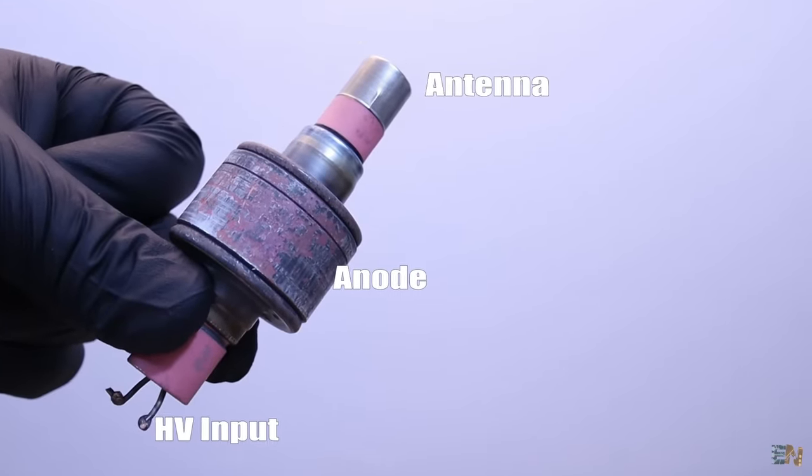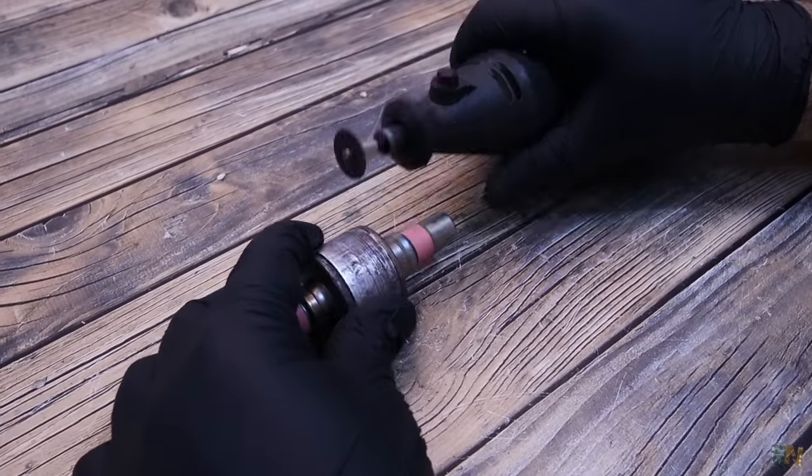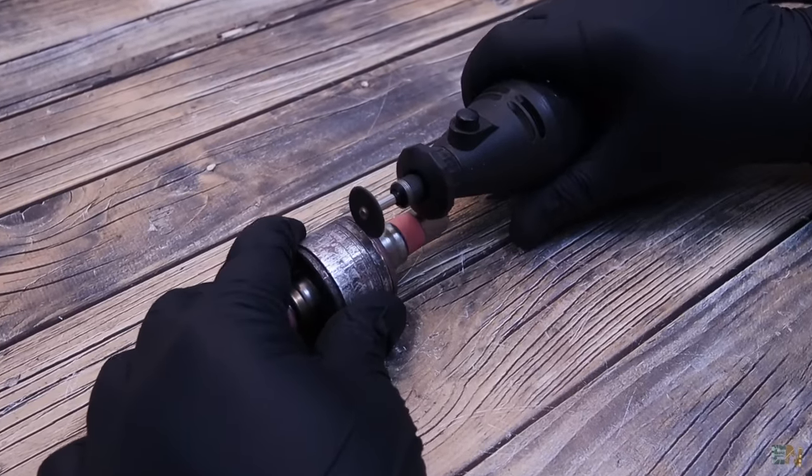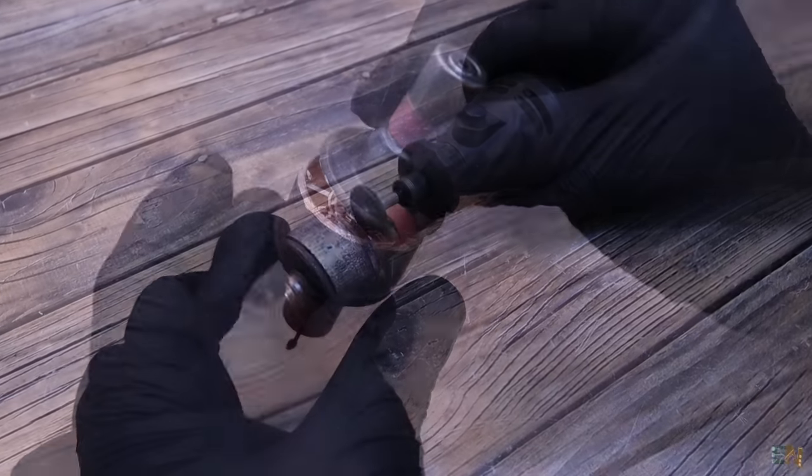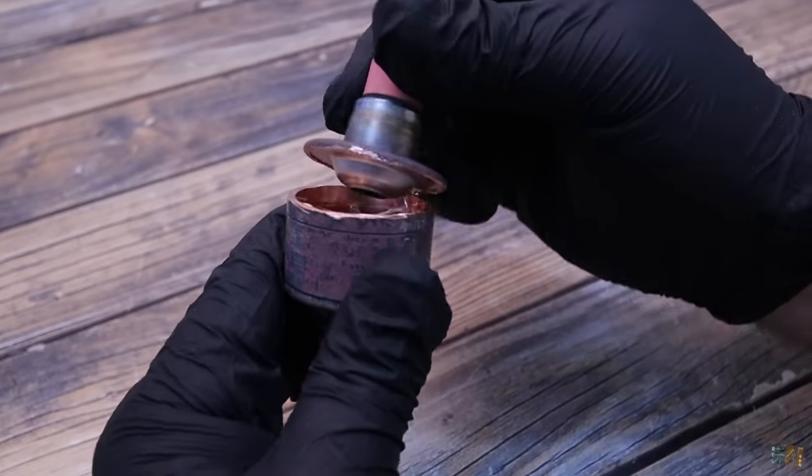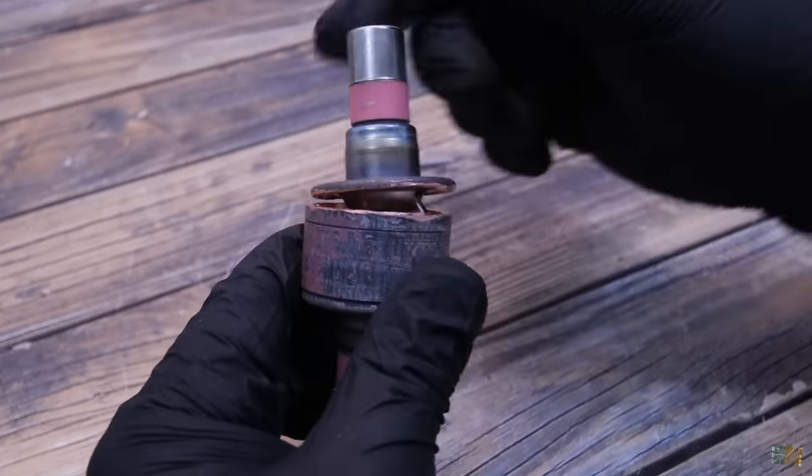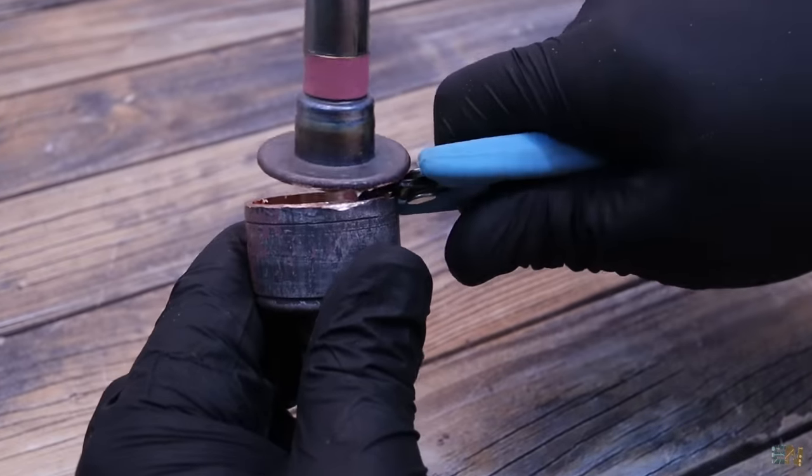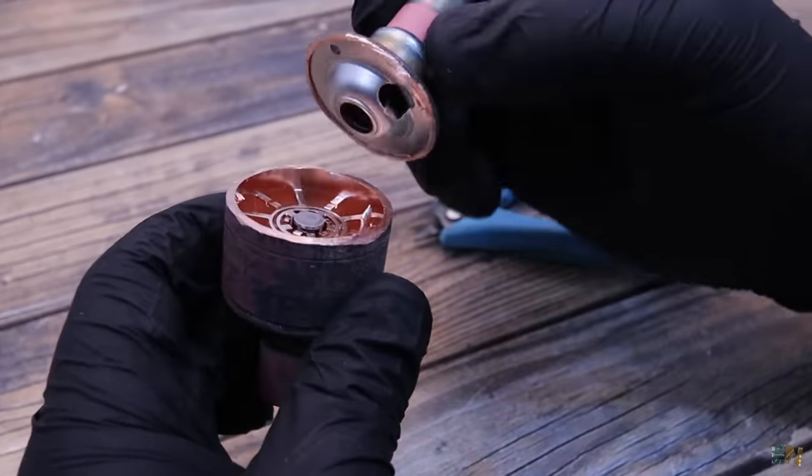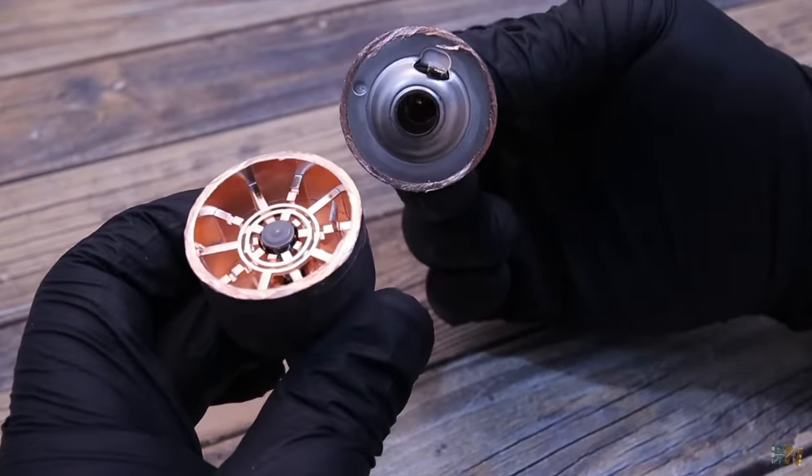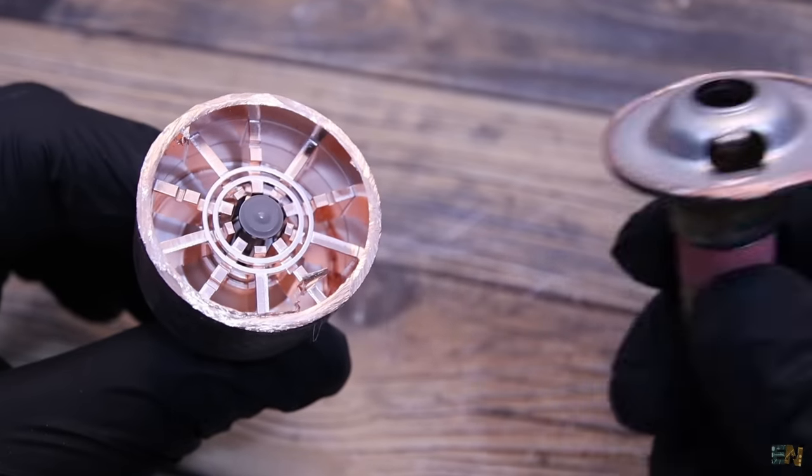So now the tricky part, to open the tube. Carefully using a Dremel tool, you cut the copper tube. It is quite thick. But finally it opened, but you will notice the main antenna inside. So twist it till you can fully open it. And this is what we have inside.